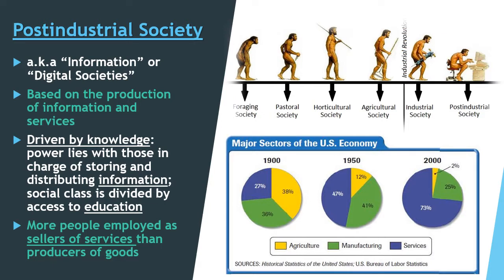Moving from industrial to post-industrial society — this is where we are now. The post-industrial society is also known as an information society or digital society. This society is based on production of information and services rather than production of goods in a factory. The post-industrial society is driven by knowledge and information. Power lies with those in charge of storing and distributing information, and social class is divided by access to education.